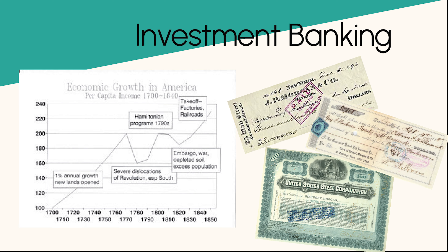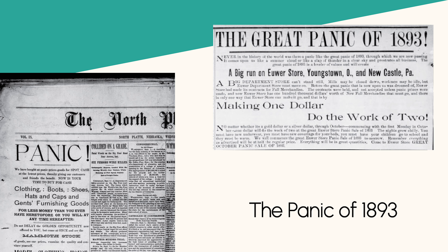Morgan is widely recognized as the father of modern investment banking. He helped establish the investment banking industry in the United States and introduced many practices that are still in use today. He was instrumental in the development of new financial instruments such as stocks and bonds, which helped fuel economic growth and provided businesses with the capital they needed to expand. Morgan also played a key role in averting a major financial crisis during the Panic of 1907, using his personal wealth to shore up the U.S. banking system and prevent a collapse of the financial markets. His actions helped restore confidence in the U.S. economy and laid the groundwork for the creation of the Federal Reserve System.